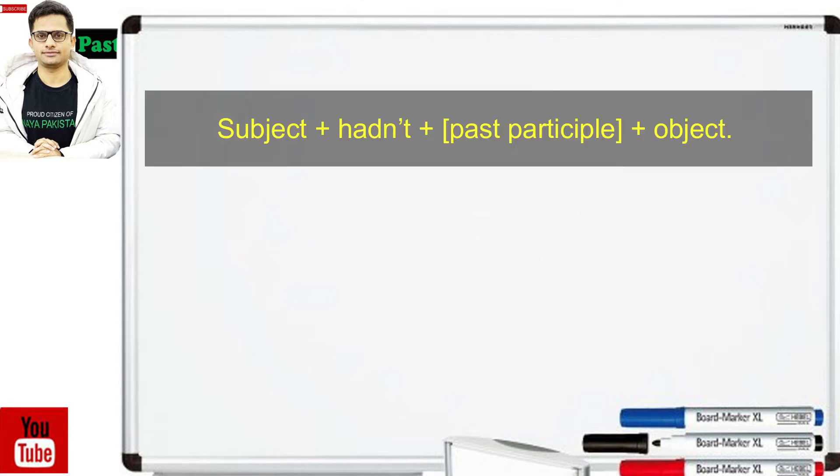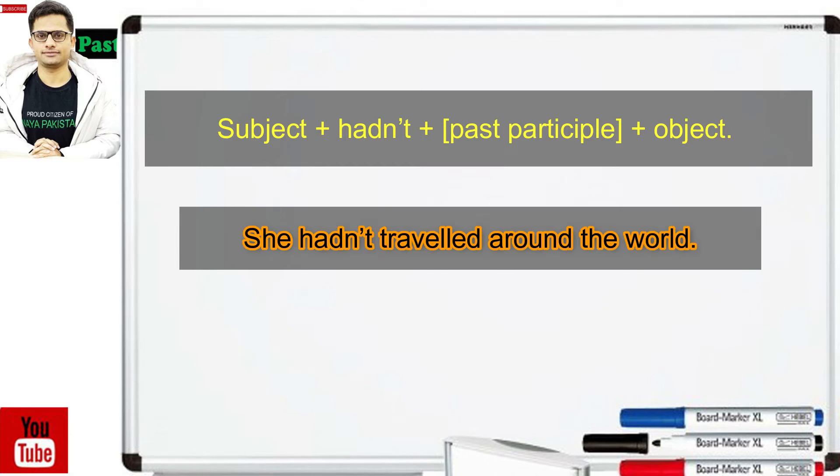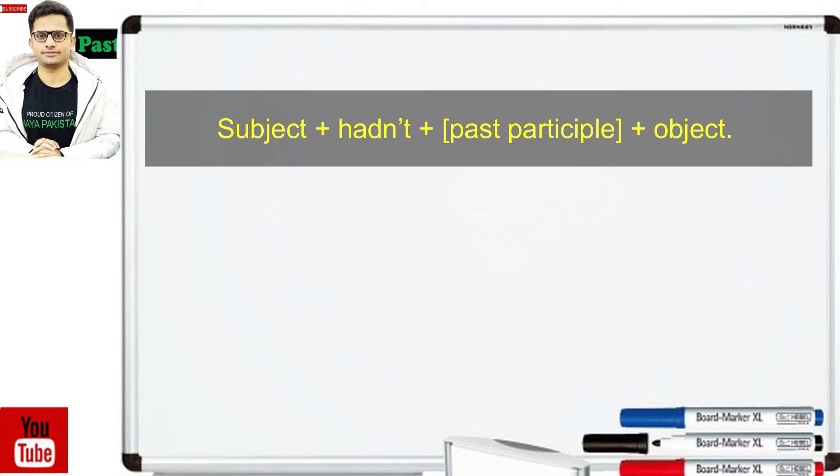For negative sentences, subject plus hadn't plus past participle plus object. It's better to use contracted form hadn't during speaking and be careful while writing an email or official letters where you don't need to use contracted form. ہماری پاس مثالی جملہ ہے she hadn't travelled around the world. hadn't جو ہے had not کی short form ہے اور حسب معمول ہم جانتے ہیں کہ short forms کا استعمال غیر رسمی گفتگو یا غیر رسمی chat میں ہم اس کا استعمال کرتے ہیں۔